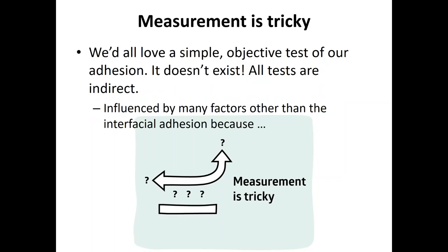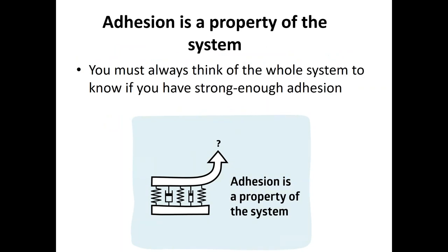What we love as scientists is an objective measure of the thing we're trying to optimize. The trouble is, in most cases, a simple objective test for adhesion does not exist. All adhesion tests, bar some simple examples, are indirect. The adhesion values we measure are influenced by many factors other than the interfacial adhesion. So measurement is tricky. Everyone has tests they don't like, and there's not a lot we can do about it.